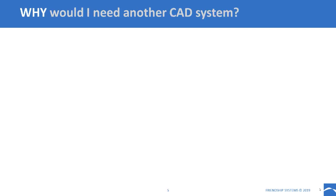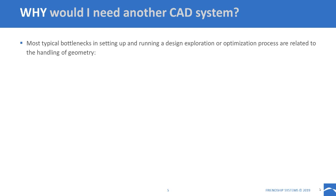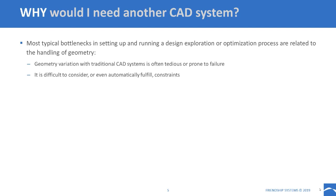CASIS is mainly a CAD tool, and you might ask why you'd need another CAD system. In our experience, most bottlenecks when setting up design exploration or optimization are related to geometry handling. With traditional CAD systems, geometry variation is often problematic — changing parameters can lead to failure to regenerate geometry or errors. Another important point is constraints: we want our geometry and optimization results to fulfill manufacturing or packaging constraints.